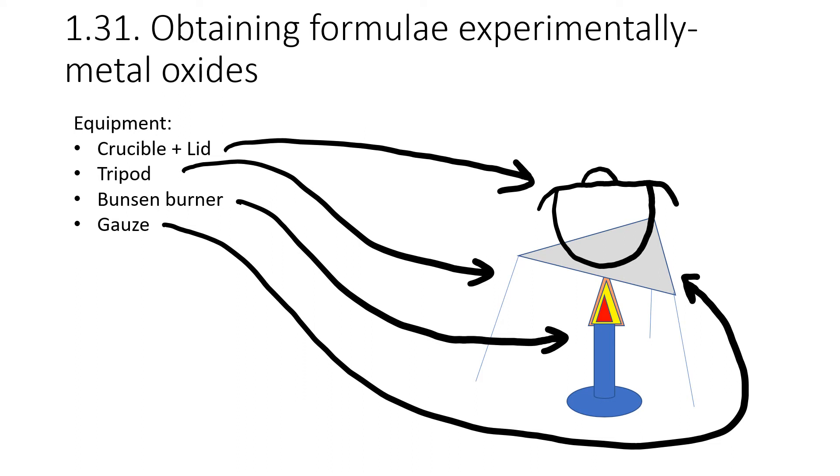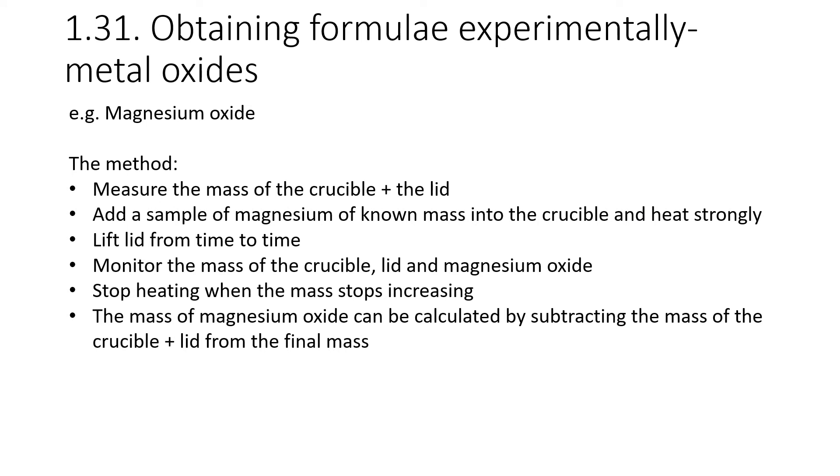Moving on to 1.31, obtaining formulae experimentally. We're looking at metal oxides here. So how can we figure out the formula of a compound, of a metal oxide, experimentally, in the lab? What we'll need is a crucible, which is essentially a fireproof little pot with a lid. And then we're going to use our usual Bunsen burner setup, a tripod with a Bunsen burner and a gauze. We're going to use the example of magnesium oxide here.